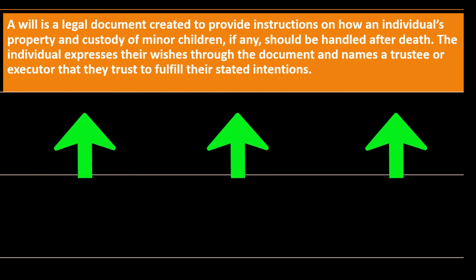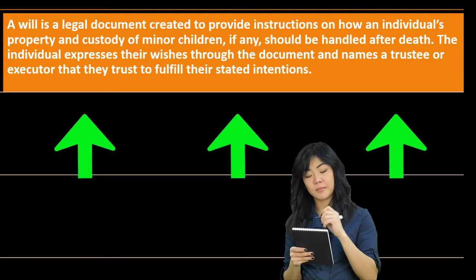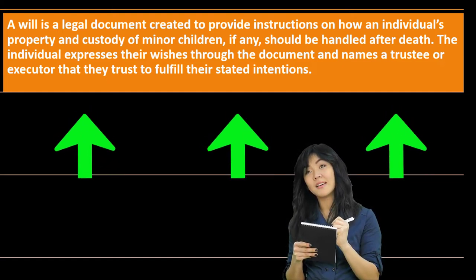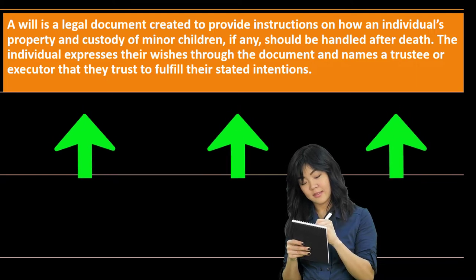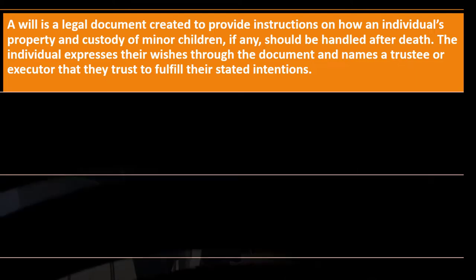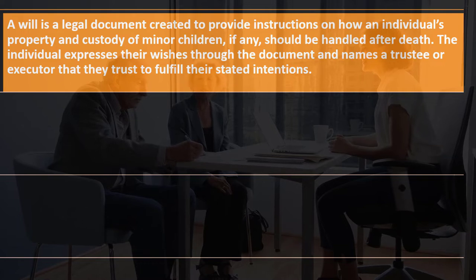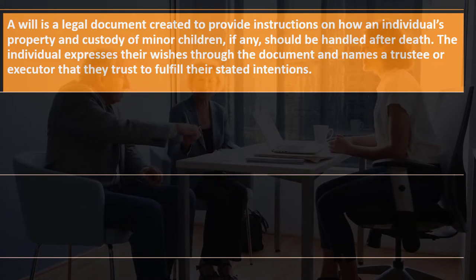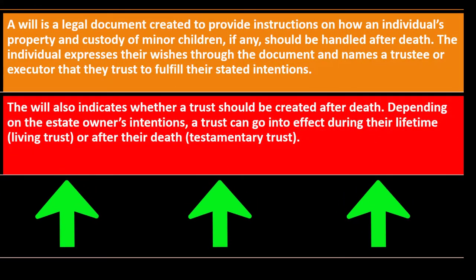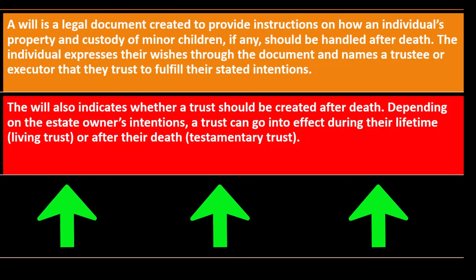Writing a will: a will is a legal document created to provide instructions on how an individual's property and custody of minor children, if any, should be handled after death. The individual expresses their wishes through the document and names a trustee or executor they trust to fulfill their stated intentions — because you'll be dead, someone else must execute those intentions.